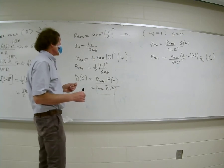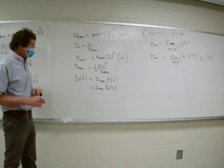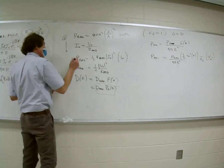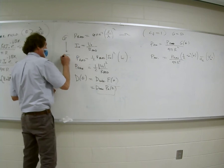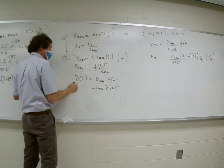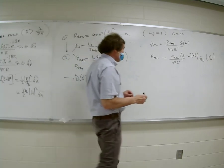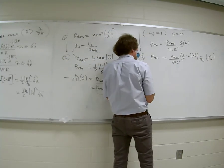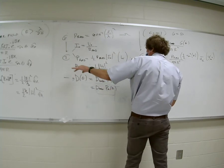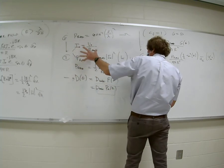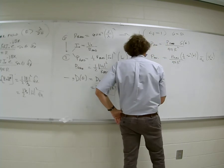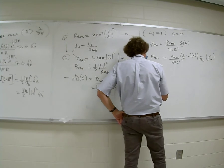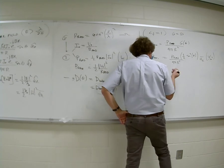Start with the radiation resistance for any antenna. Then find the current and power radiated. These are the normal steps: step 1 is radiation resistance, step 2 is current and radiated power, and step 3 is using gain to find power density. You have to know this for any antenna.